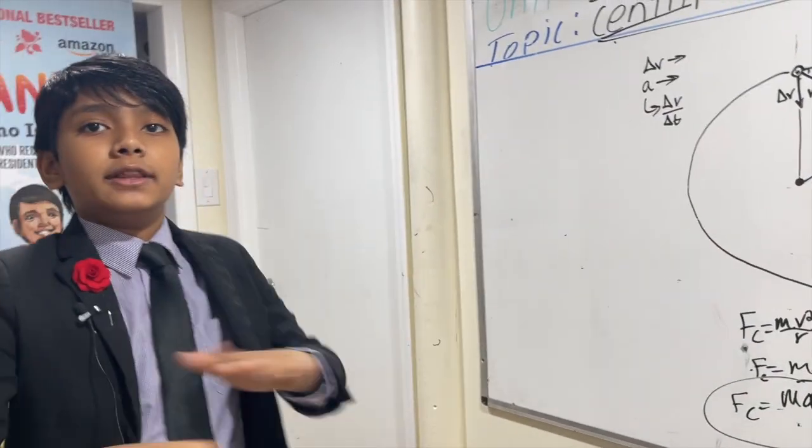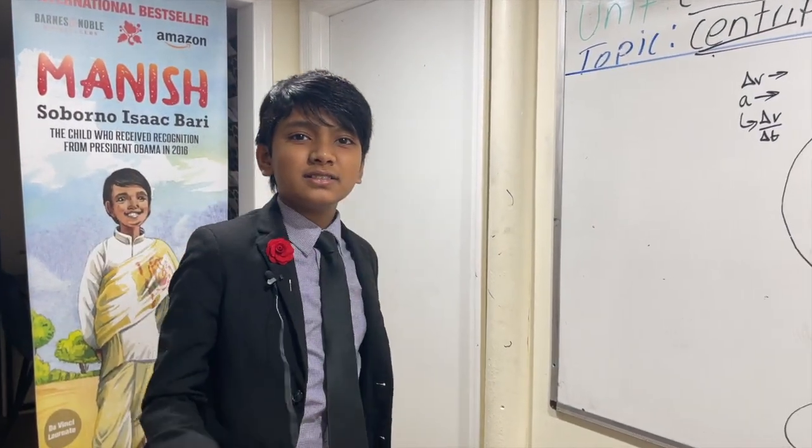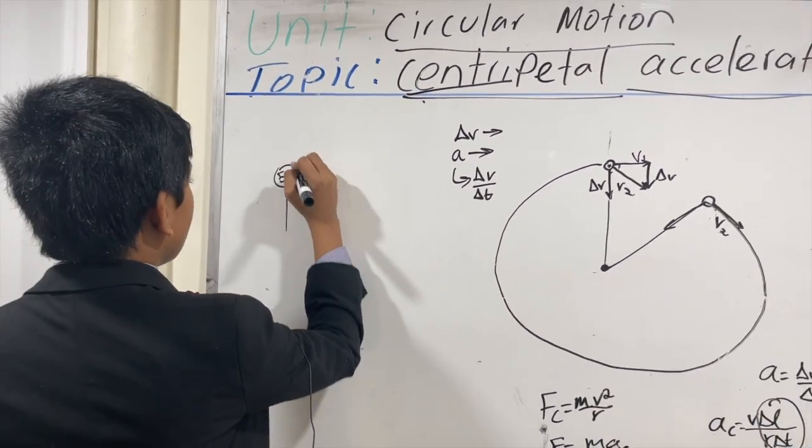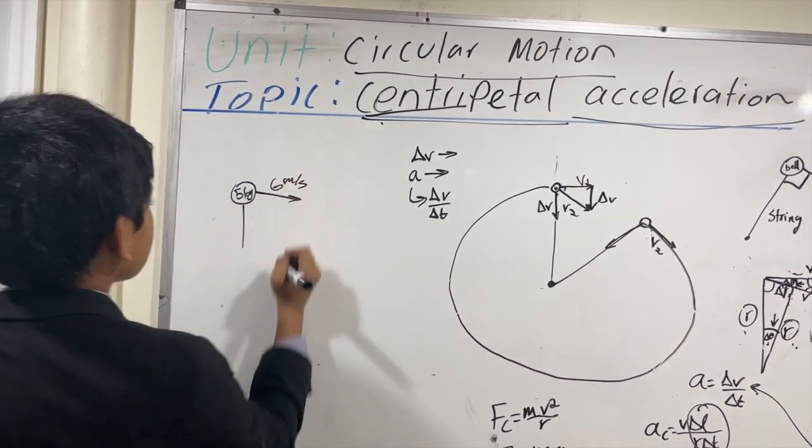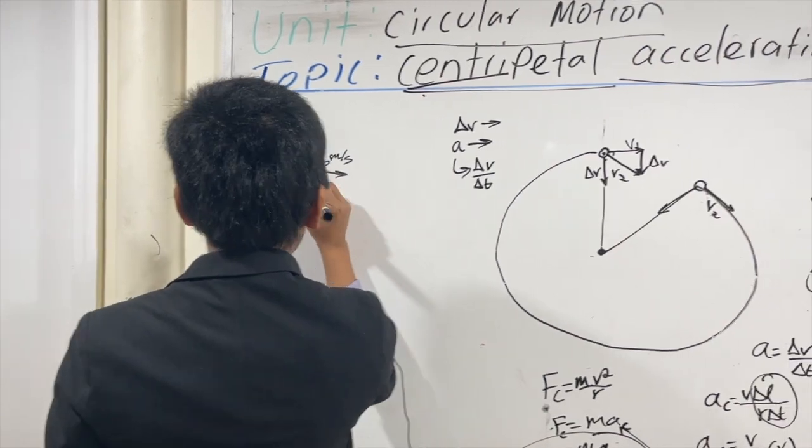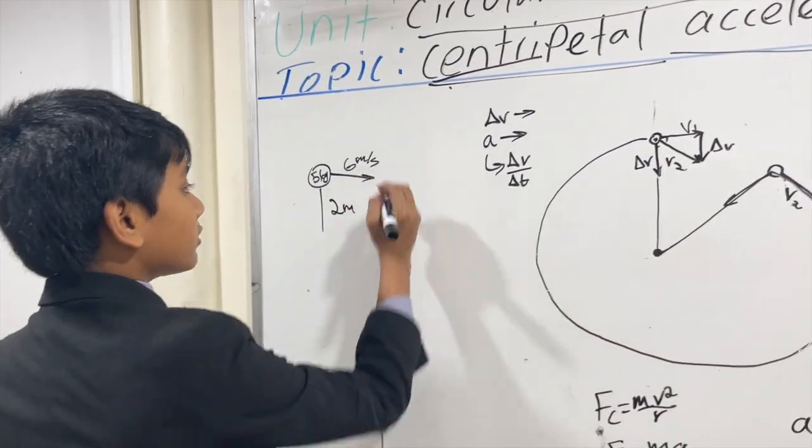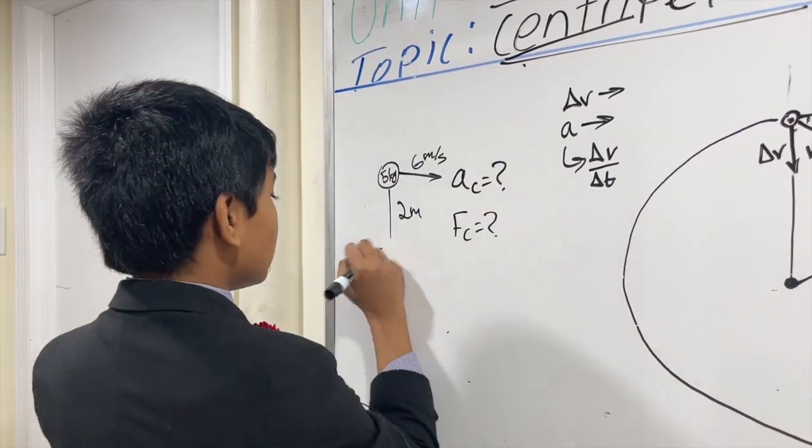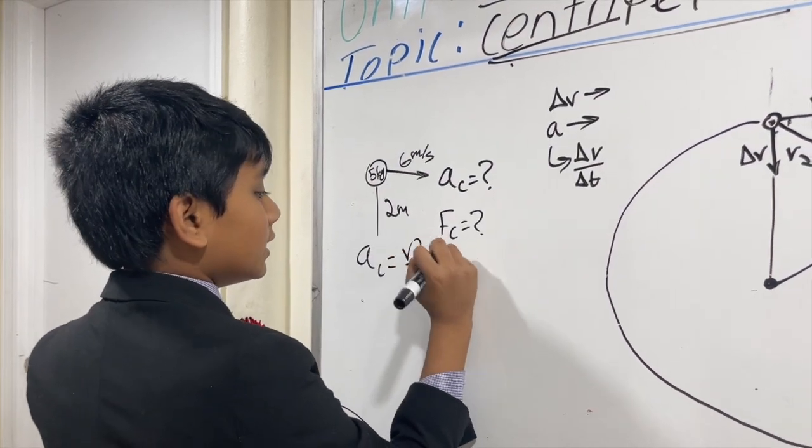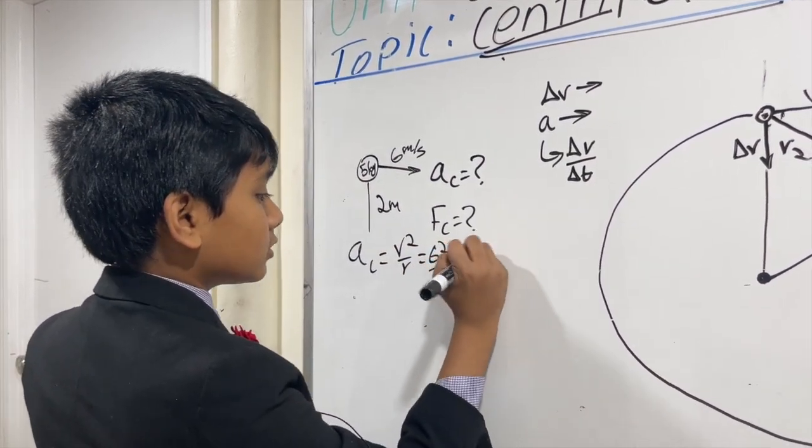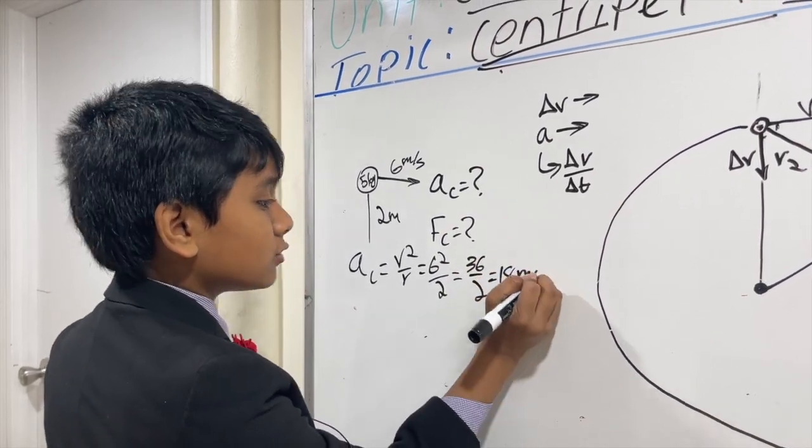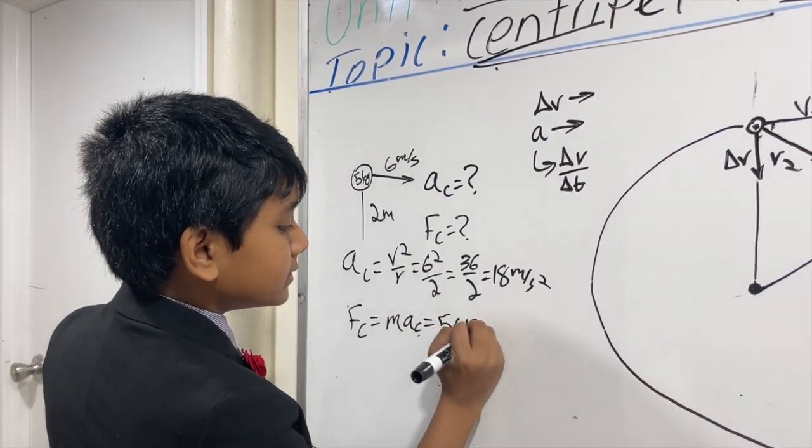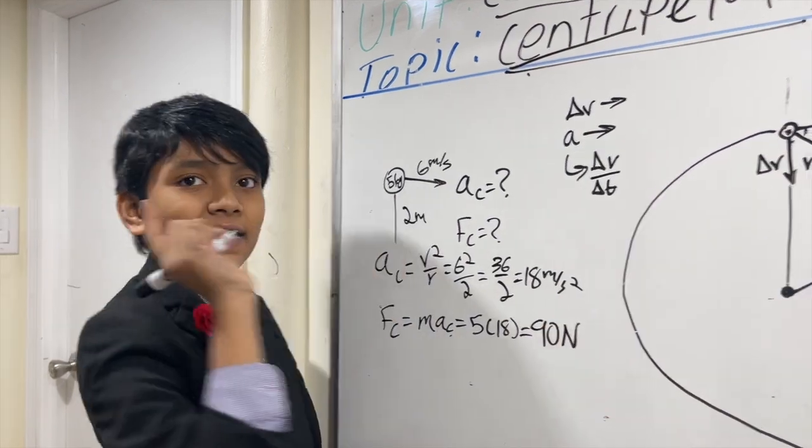So now, let's solve one problem with this to end it all off. So let's say that we have a 5-kilogram ball that is traveling at exactly 6 meters per second, uniform velocity, with a 2-meter radius. We're going to find AC and FC. Now, using our hard-earned equations, we can find AC equals V squared over R, 6 squared over 2, is equal to 36 over 2, equals 18 meters per second squared. And now, FC, just MAC, which is 5 times 18, is 90 newtons. That's it.